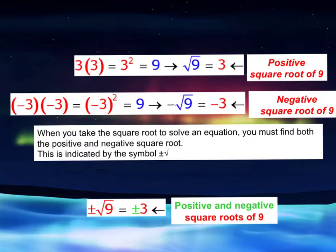Here we have two numbers multiplied by each other. We're just going to work with positives at first. 3 multiplied by 3, another way to write that is 3 squared. And if we simplify 3 squared, we would get 9. Therefore, the square root of 9 will equal positive 3.